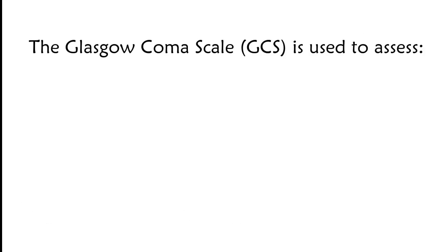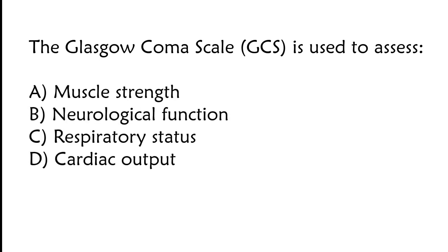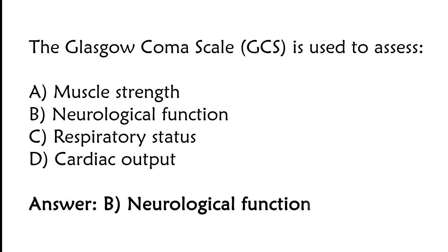The Glasgow Coma Scale (GCS) is used to assess: muscle strength, neurological function, respiratory status, or cardiac output. The correct answer is option B: the Glasgow Coma Scale is used to assess neurological function.